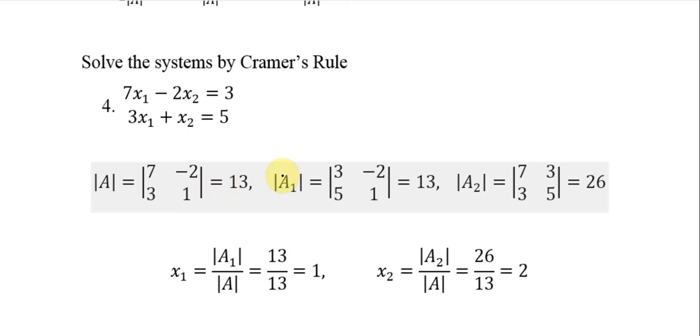Now A sub 1, I'm going to replace 7 and 3 with 3 and 5. So A sub 1 is 3, 5, and then we bring over the negative 2 and the 1. Here we get 13 for that determinant.